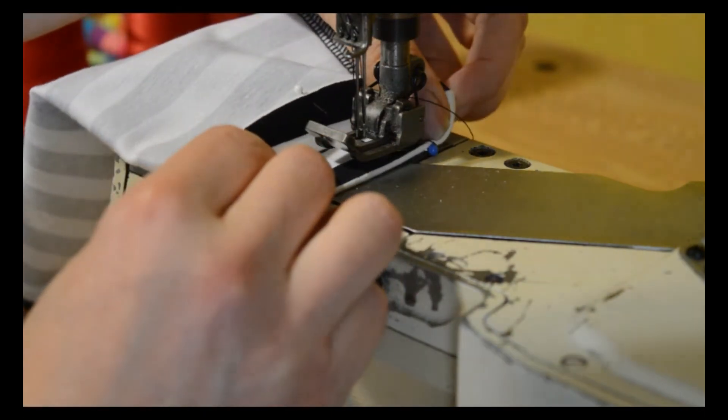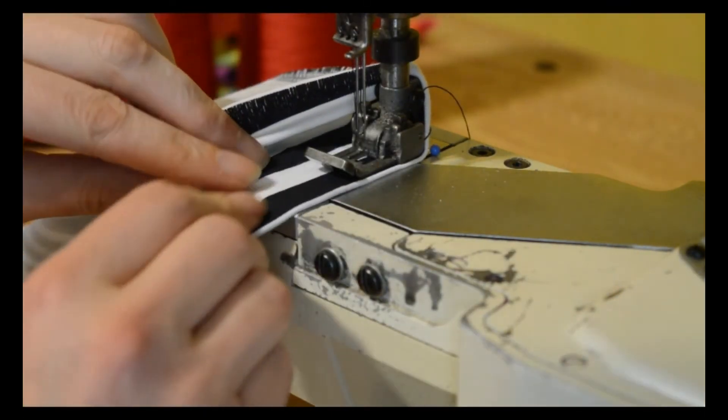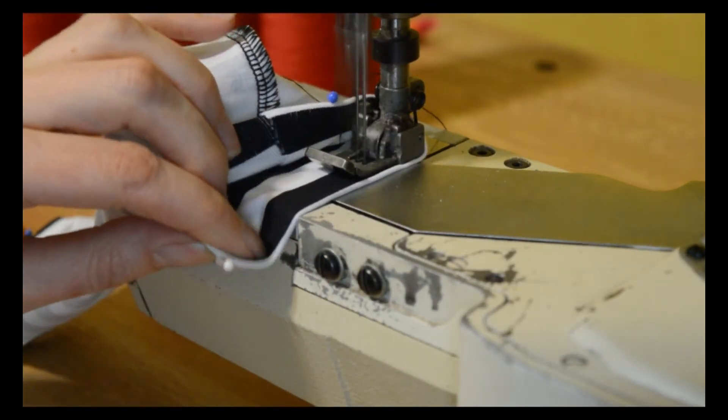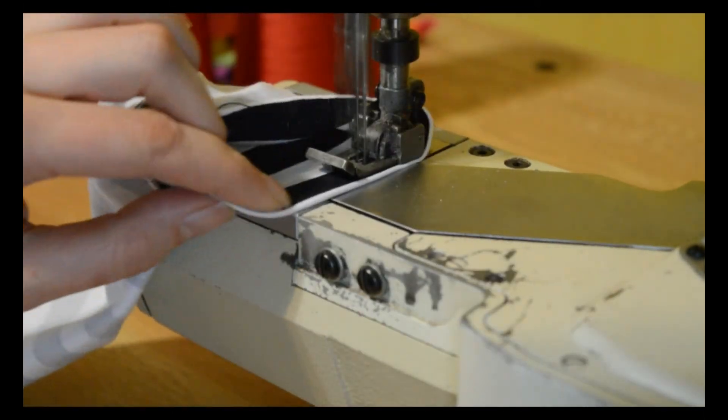It is usually easier to sew the hem with the sleeve the wrong way out and the presser foot inside the sleeve opening. Sew up the hem at either end of your arm warmer using either a zigzag stitch on your sewing machine or a cover stitch.